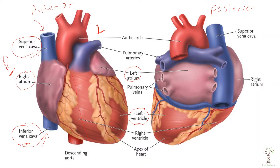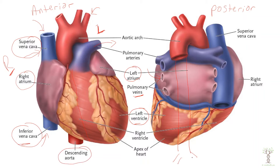The pulmonary arteries are going to send blood to the lungs, and the pulmonary veins are going to bring blood back from the lungs to the heart. The aorta is the largest blood vessel and is going to branch off and send blood to the upper body. It goes down behind the heart, and this descending aorta will have blood vessels branching off that go to the tissues of our lower body.